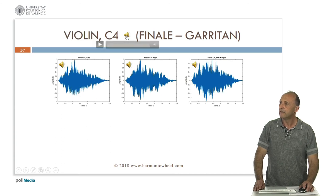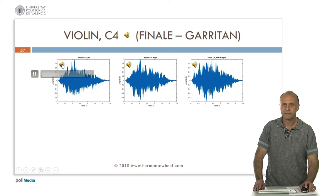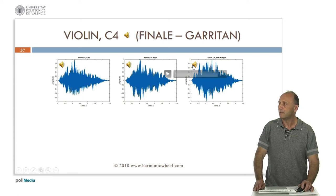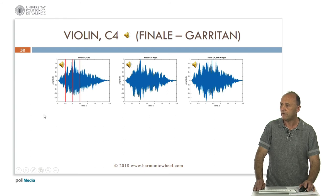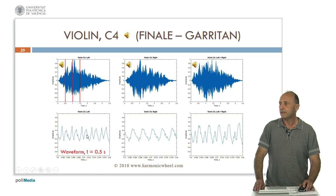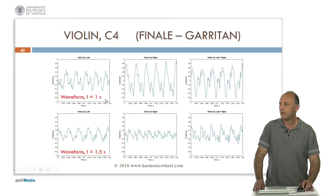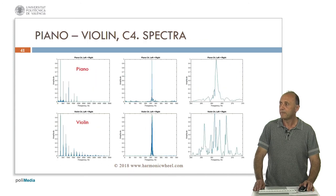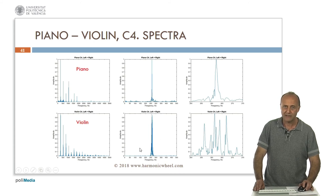Now let's listen to a violin. This is the stereo sound, the left channel, the right channel, and the sum. The waveform also changes with time. Let's see the waveform for time equal to 0.5 seconds — left channel, right channel, and the sum — for t equals 1 second, and for t equals 1.5 seconds. So in all cases the waveform changes with time. These are the spectra for the piano — it contains several lines, but each of them is quite complex. And in the case of the violin, each line as we can see contains an oscillating frequency, and the shape of the line is really complex.